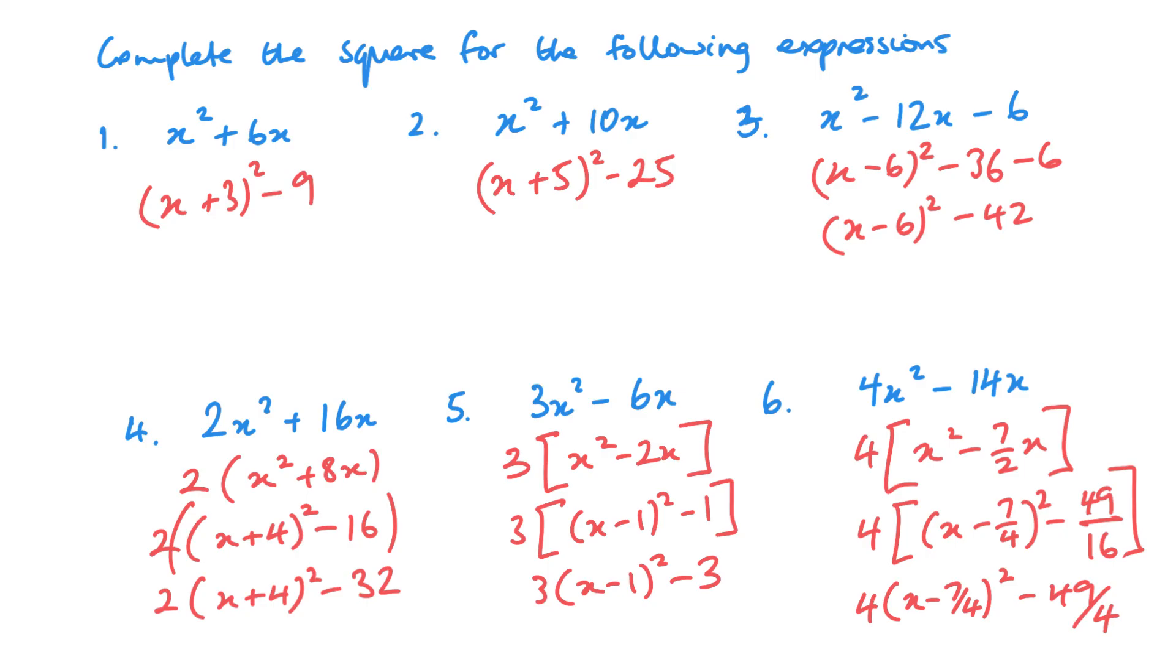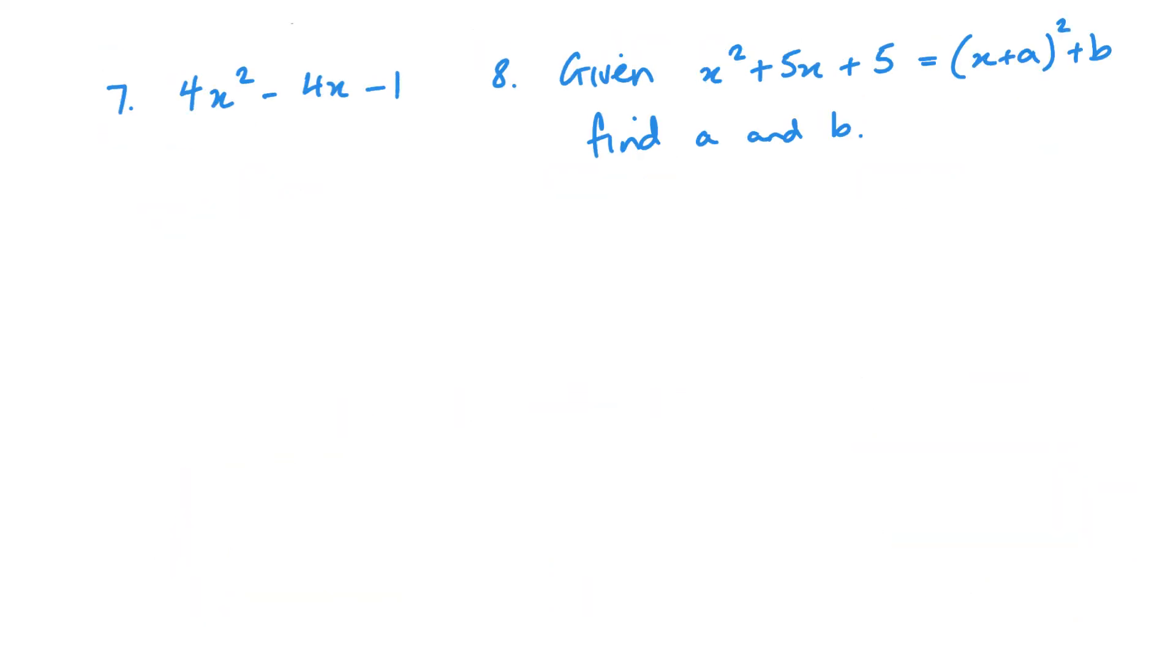Final two questions. Just take the 4 out: x squared minus x minus 1. So this is x minus a half squared minus a quarter minus 1. Then we've got 4 brackets, x minus a half squared minus 1 minus 1, 4 brackets x minus a half squared minus 2.